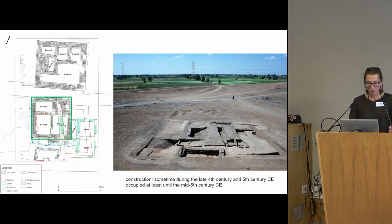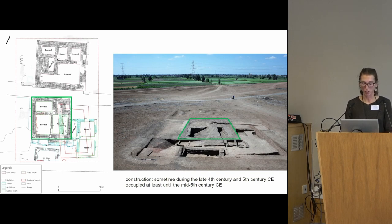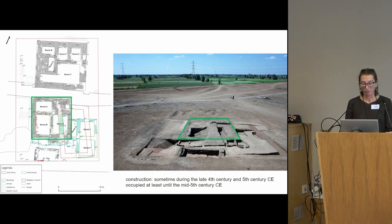The house is of square plan, subdivided into three rooms, with space for a possible staircase that would have led to the upper stories. Nothing of the superstructure has been preserved, and the building was entirely built in mud bricks, aside from fired bricks used for some installations and architectural additions.